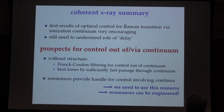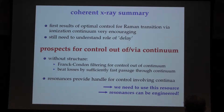As a general message for this talk: there are prospects for control either out of or via resonances. If there is no structure at all, the best you can do is either time pattern filtering or beat the losses by sufficiently fast passage. But if you do have resonances, this provides a handle for control, and we should use this resource and engineer results to make the effective enhancement larger.